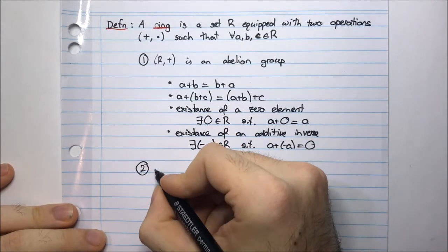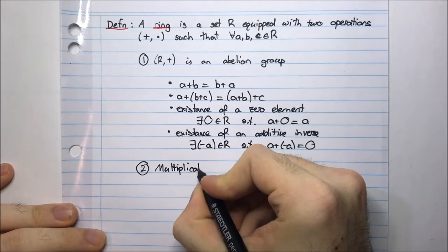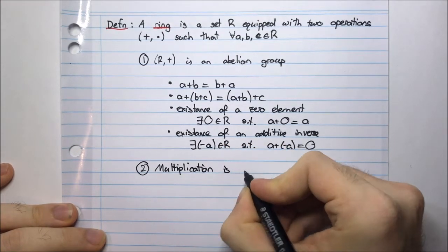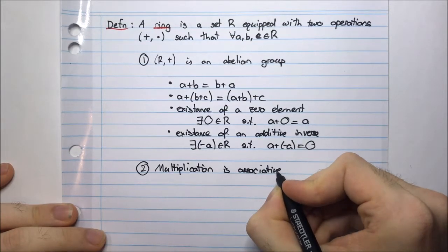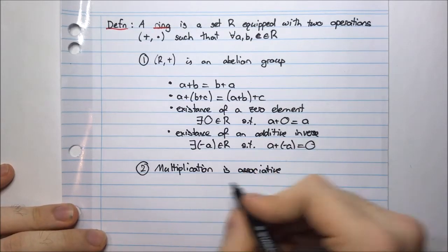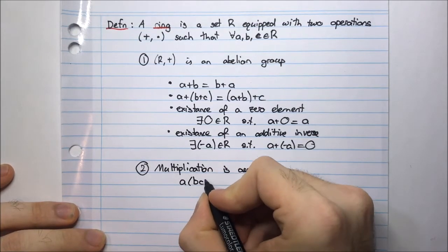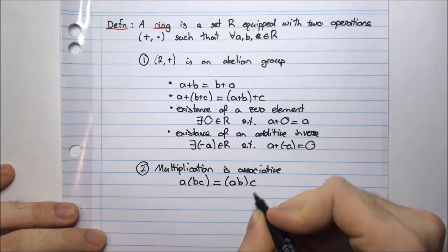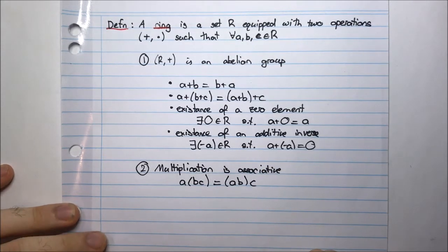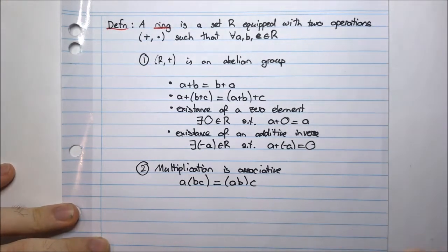The next condition is that multiplication is associative. This is the only condition we have on multiplication. What does it mean for multiplication to be associative? It means A multiplied by B times C is equal to AB multiplied by C. There's only one condition on multiplication, while there are quite a few conditions on addition.